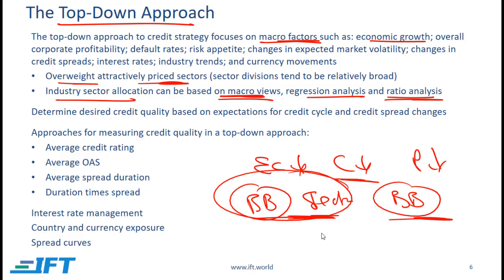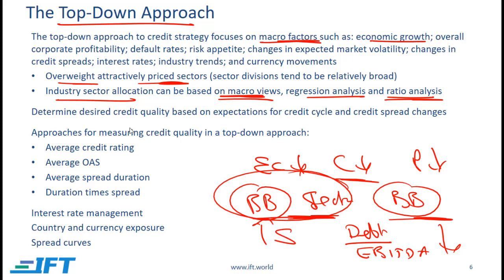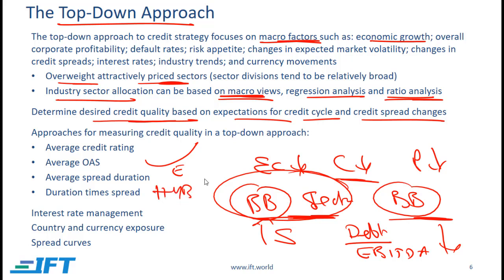With ratio analysis, one example is comparing spreads versus debt-over-EBITDA, a measure of leverage. If in a given industry spreads are relatively high but this ratio is low, that implies the sector is undervalued. An important decision in top-down analysis is the desired credit quality, based on expectations for the credit cycle. Generally when the credit cycle strengthens, high yield bonds tend to outperform investment grade bonds; when the economy is likely to weaken, investment grade bonds are likely to outperform.